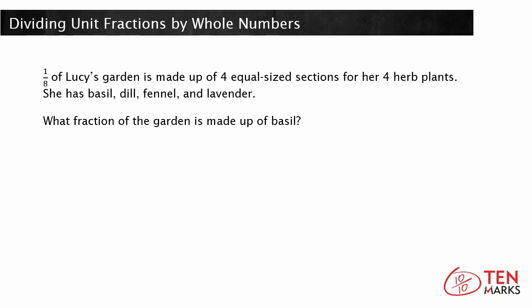One eighth of Lucy's garden is made up of four equal size sections for her four herb plants. She has basil, dill, fennel, and lavender. What fraction of the garden is made up of basil? You're going to need to come up with a math expression that will allow you to solve this question.